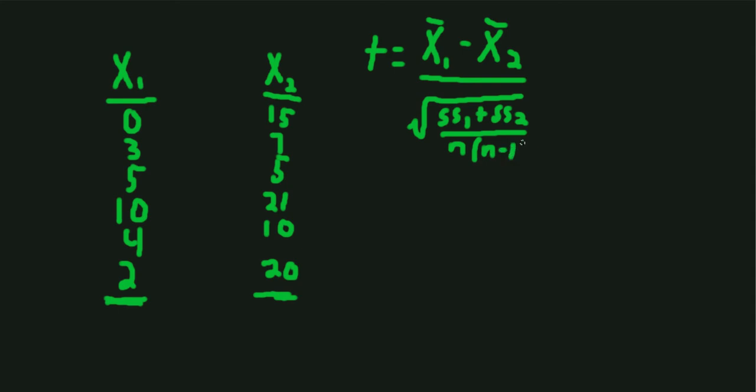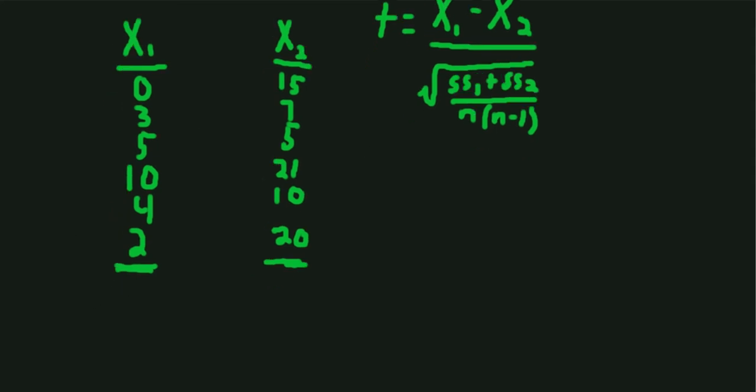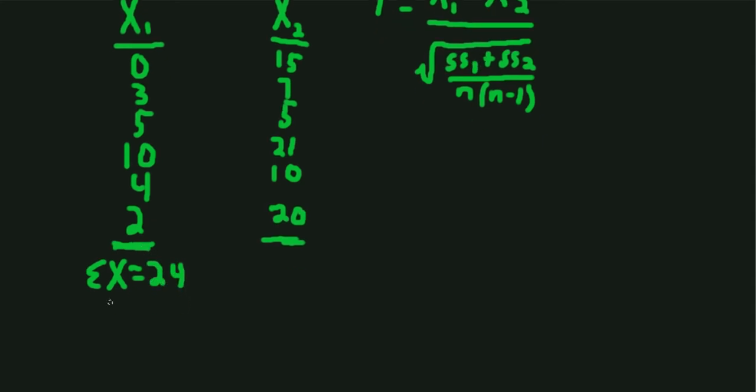First step is we can calculate the means. Let's first get sum of X, and we're going to need that along the way. Sum of X, if we add up all these scores, adds up to 24, and the mean for this group is 24 divided by 6, which equals 4.